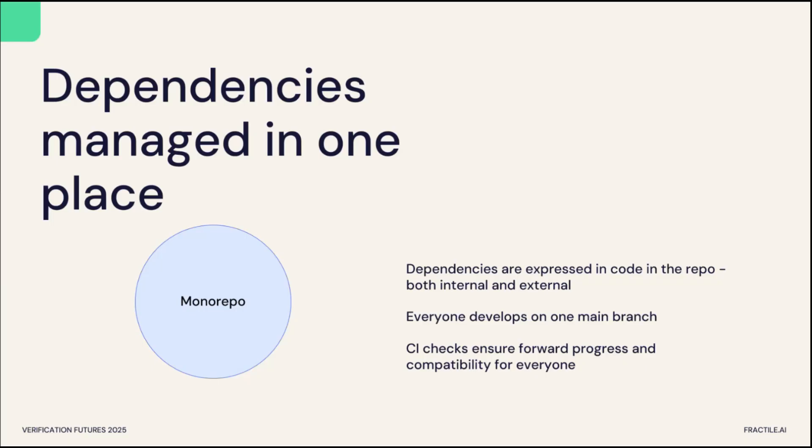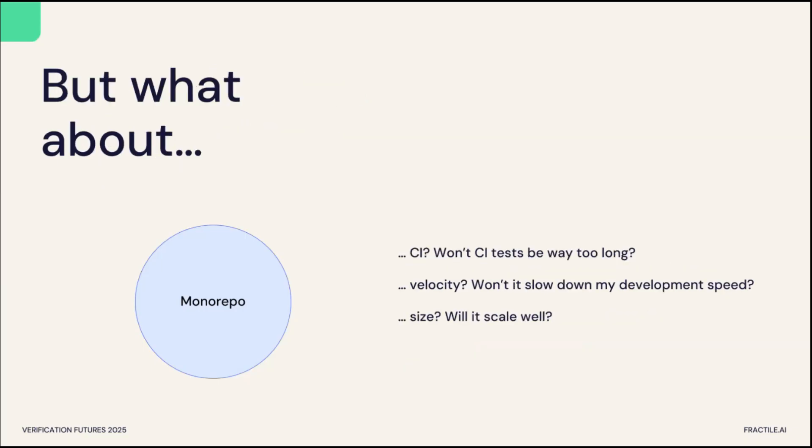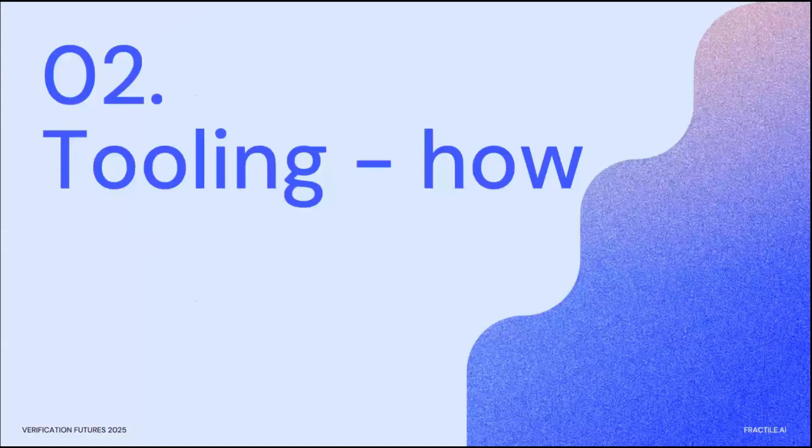Hopefully this has triggered some questions — some whataboutery. What about CI? Won't my CI tests just be absurdly long? What about my velocity? Won't it slow down my overall commit speed to the repository? And what about size? Won't it just be a massive repo that no one can clone in a reasonable amount of time? To answer those questions, we need to move on to the how — the tooling. How have we built the monorepo at Fractile?